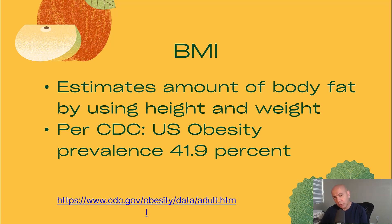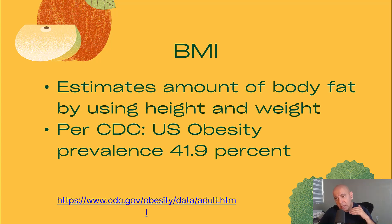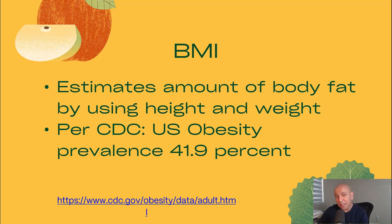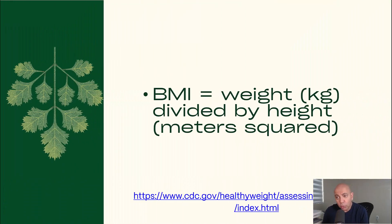When you look at the guidelines that exist, there's a way to categorize people. The CDC says that U.S. obesity prevalence — how many folks around the country have what's classified as obesity — is around 41.9% currently. That's a staggering statistic, and unfortunately over the last several decades, that number has only gone up.